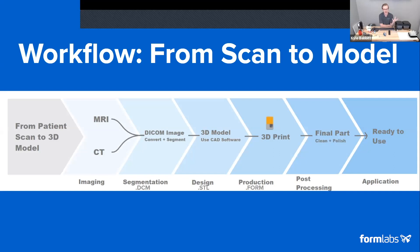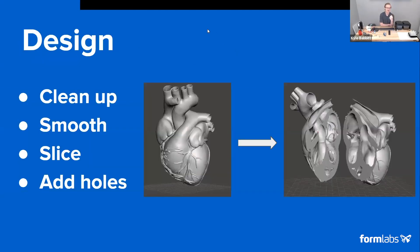Segmentation is used to group a bone, an organ, a vessel, or whatever region of interest you are trying to produce. The accuracy of that scan will translate into the dimensional accuracy and surface detail of the print. Later we'll be covering making drainage holes, slicing models, and smoothing models — basic design tips you can apply to the model from segmentation to increase printability. We'll also look at how I produced a model made out of two different materials in two different colors.